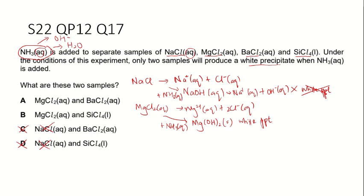Therefore, looking at options A and B — both contain magnesium chloride, because magnesium chloride will produce a white precipitate when ammonia is added. So now we consider barium chloride and silicon chloride.